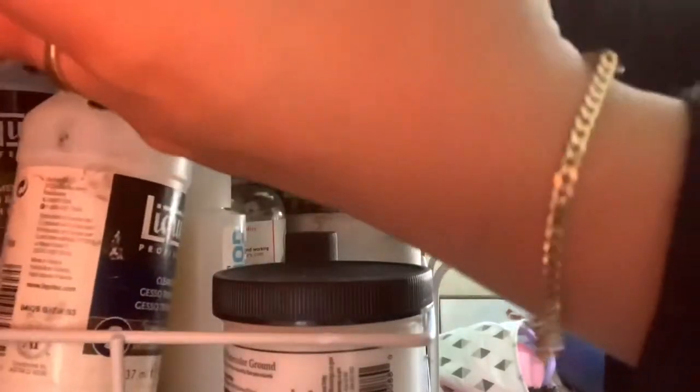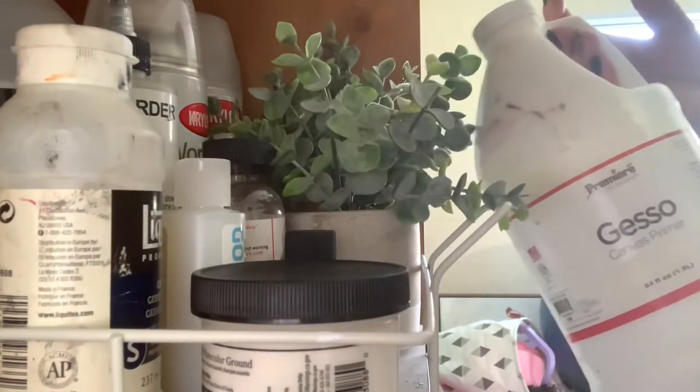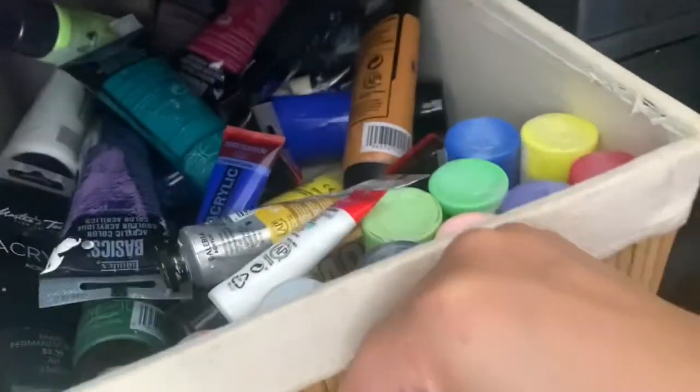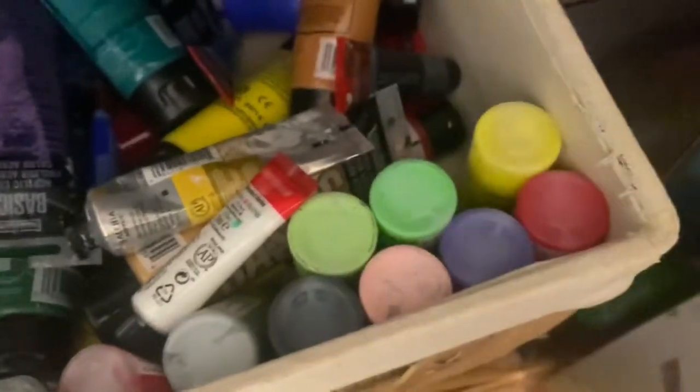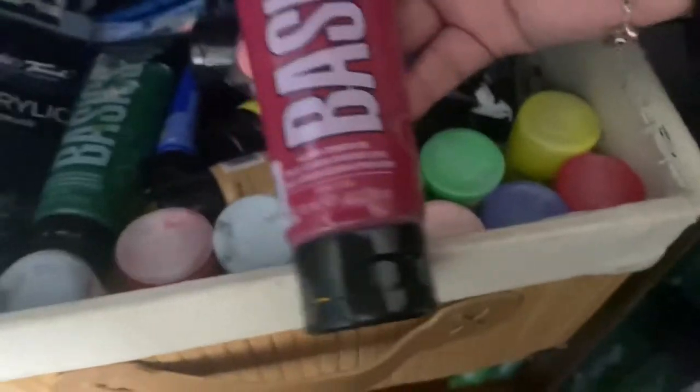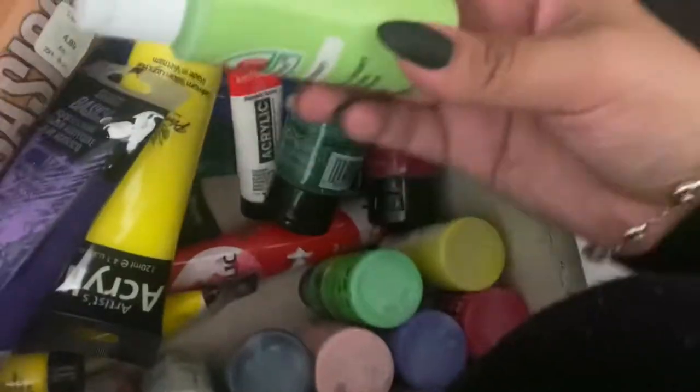But before we get started, I thought I'd bring you along on a mini journey of how I prepped my surfaces for painting and maybe it'll help you. It's honestly really simple. I take my white gesso, pick out an acrylic color. I've been experimenting a lot lately with different color canvases. I'm still trying to understand and teach myself color theory, so this is a part of that.